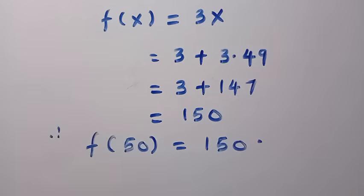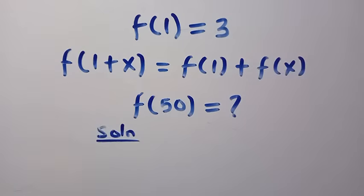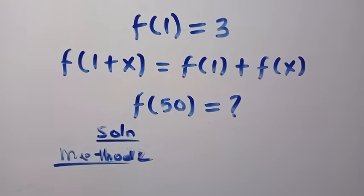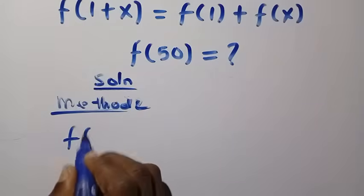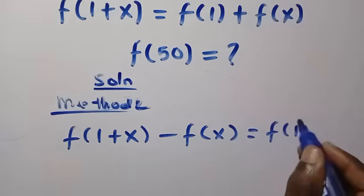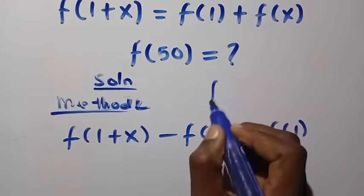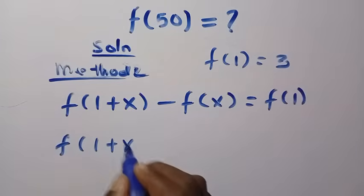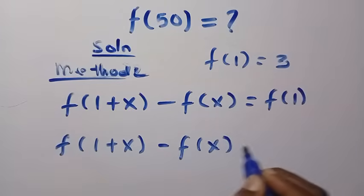That's the first method. Now let's consider the second method. We rearrange the functional equation: f(1 + x) − f(x) = f(1). Since f(1) = 3, we have f(1 + x) − f(x) = 3.